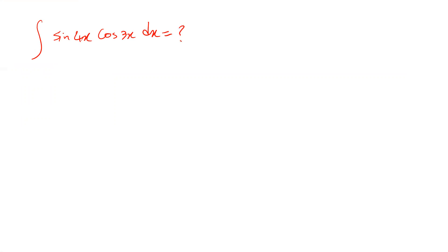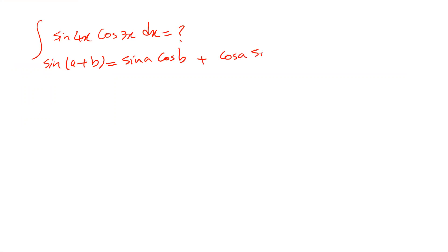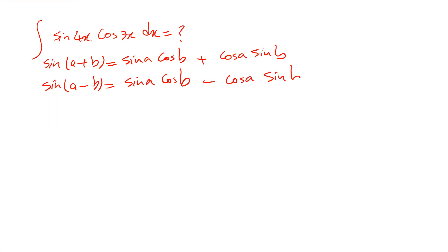To solve this integral we need to use two formulas from trigonometry. That is: sine(a + b) is equal to sine a cosine b plus cosine a sine b, and sine(a − b) is equal to sine a cosine b minus cosine a sine b.